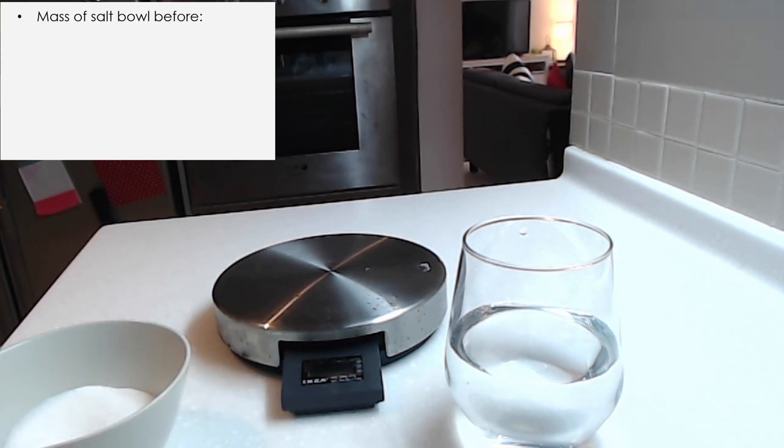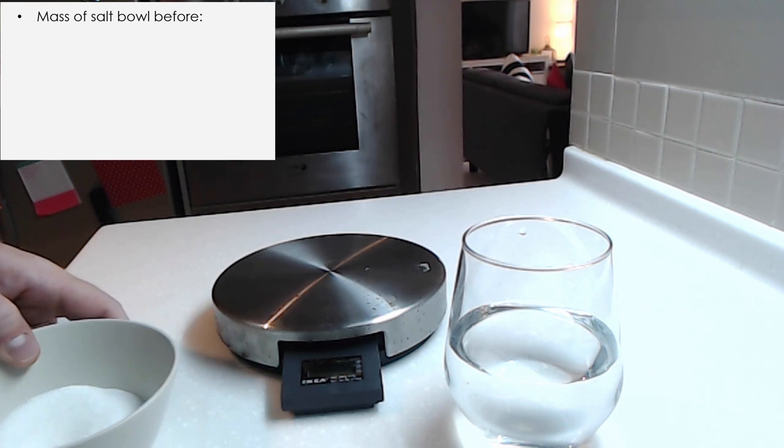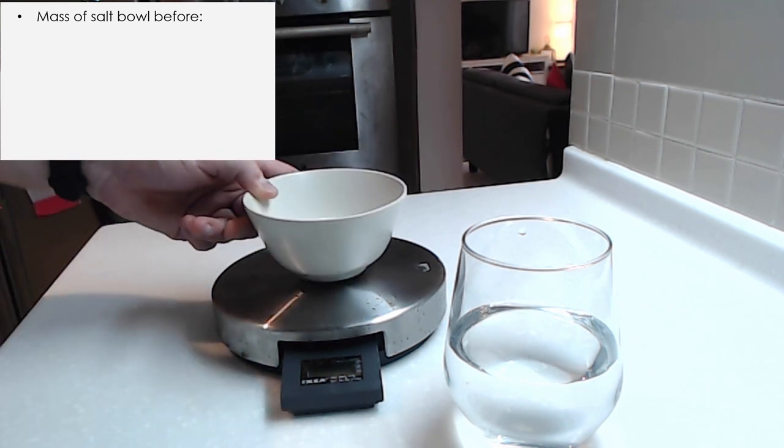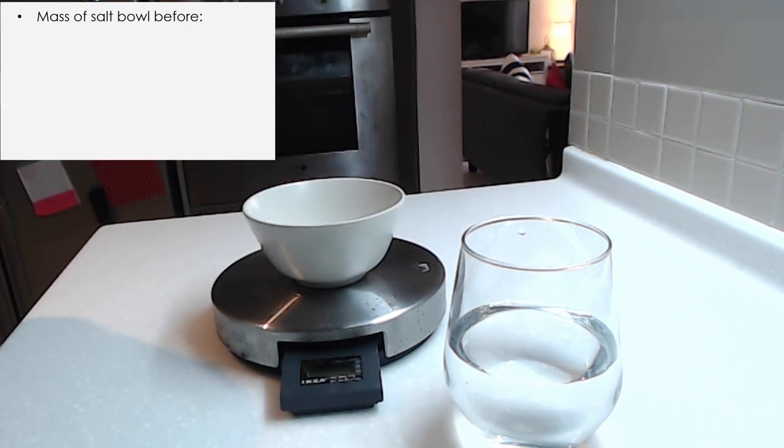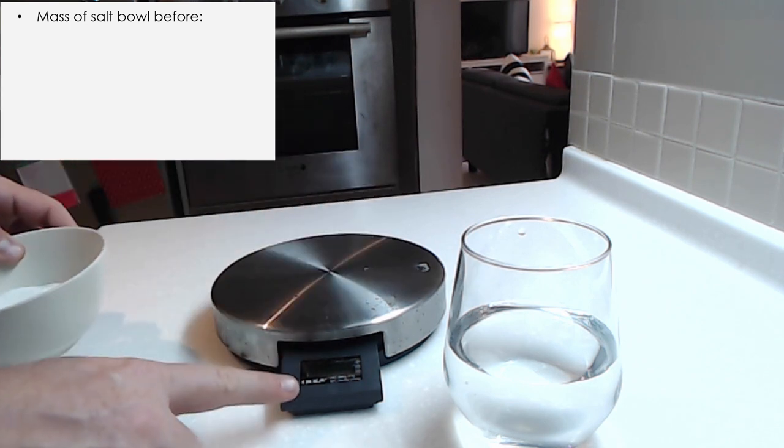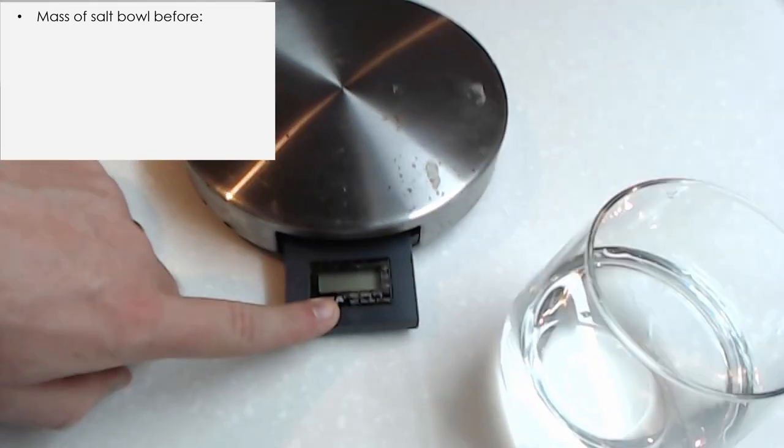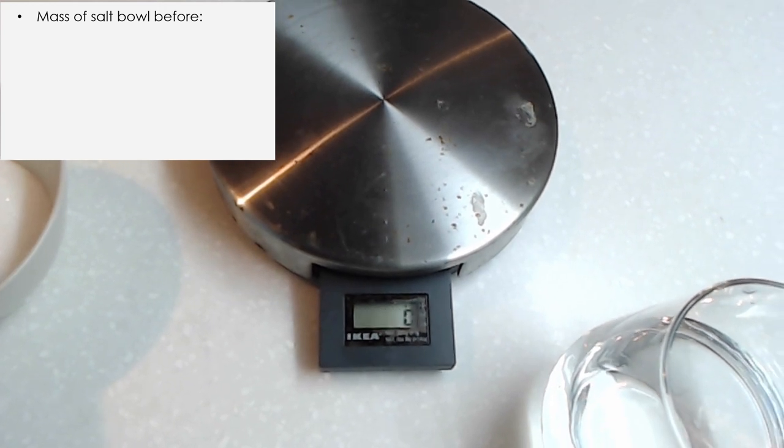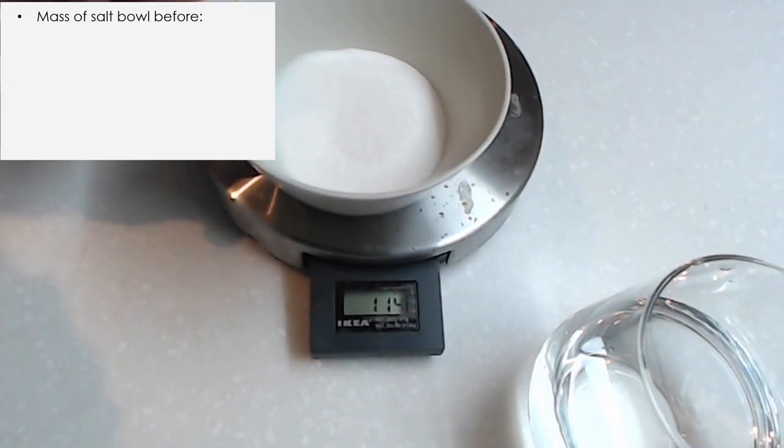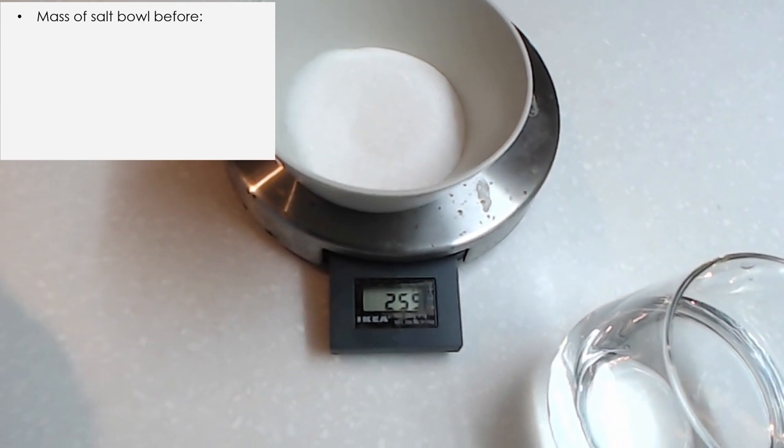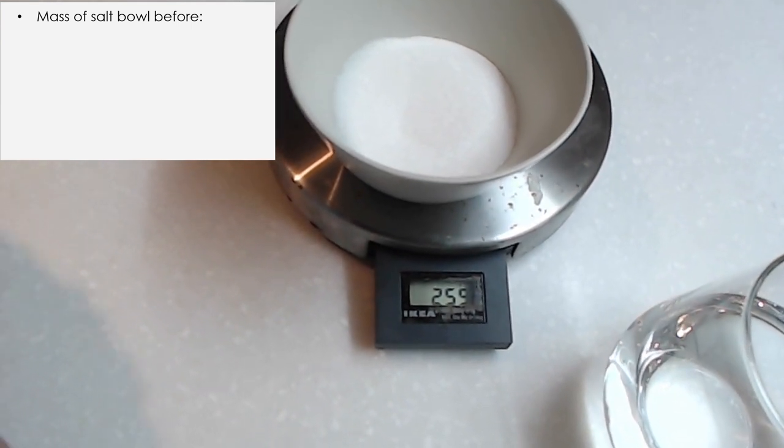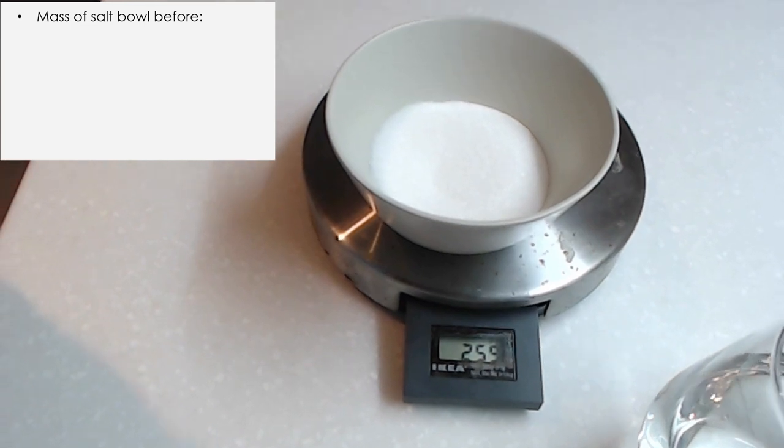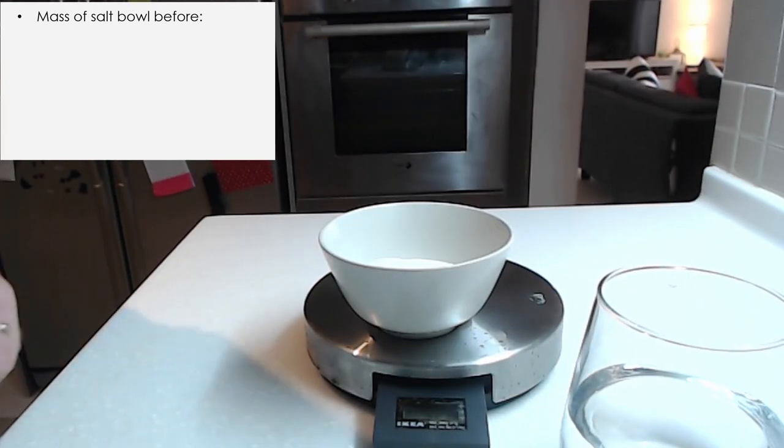So the first thing I'm going to do is I'm going to find the mass of the... It says salt, but I'm actually using sugar. I'm going to find the mass before I do anything. So I need to turn on my scale, or my balance. You can see it's reading zero. And now when I put the bowl with my sugar in it, it says 259 grams.